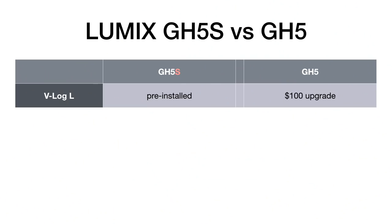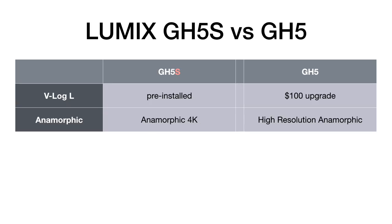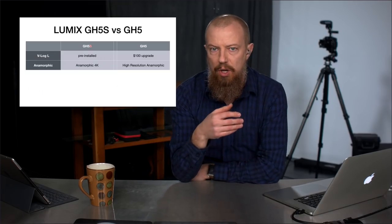That brings us to V-Log. On the GH5S it's pre-installed; on the GH5 it's a $100 upgrade. Available on both, capable on both — on the GH5 you just have to add it in. For anamorphic, there's a big interesting difference: you have anamorphic 4K on the GH5S, but high-resolution anamorphic on the GH5 — something you don't have on the S.